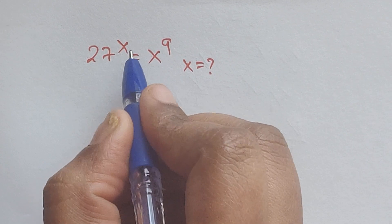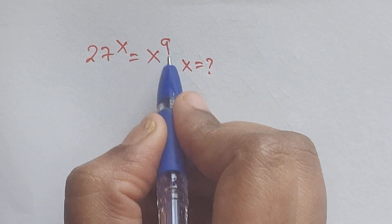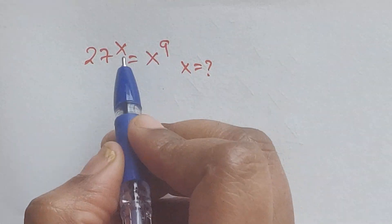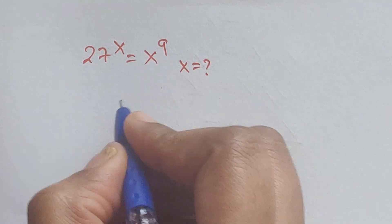Here we have one problem: 27 to the power of x equals x to the power of 9. In this problem we have to find the value of x. So how do we solve this? Let's see.